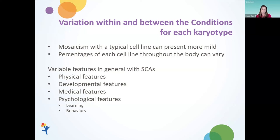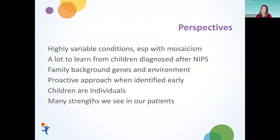There really can be a lot of variability in the features associated with mosaicism, whether physical, medical, developmental, or psychological features impacting both learning and behavior. It's important to keep perspective that these are highly variable conditions, especially with mosaicism, which makes prognosis that much harder to anticipate. We have a lot to learn, especially with new technology enabling identification even before birth. We know that while genes can impact our growth and development, they don't define us as individuals — family background, genetics, and the environment in which we're raised can really impact our outcomes.